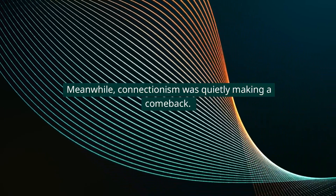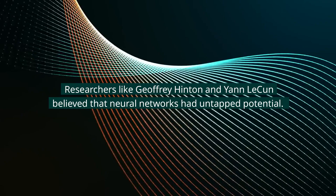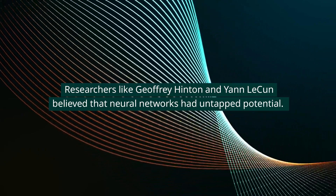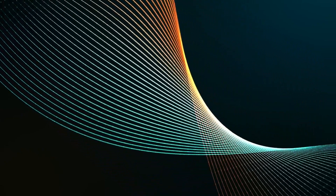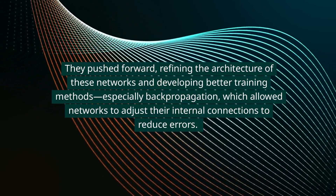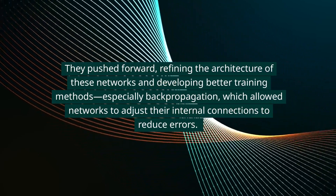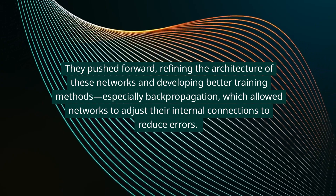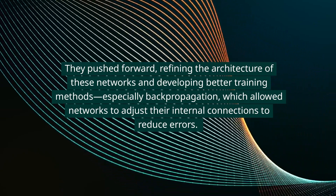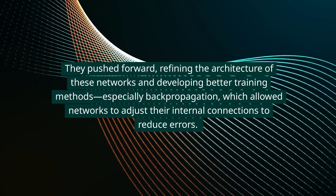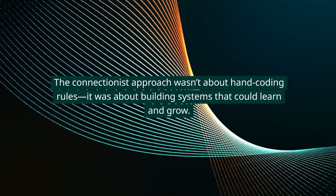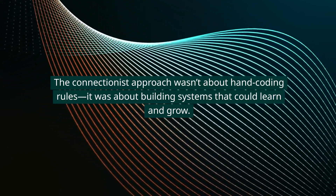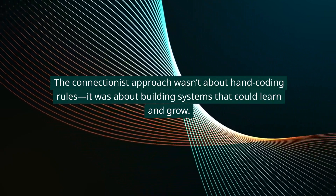Meanwhile, connectionism was quietly making a comeback. Researchers like Geoffrey Hinton and Yann LeCun believed that neural networks had untapped potential. They pushed forward, refining the architecture of these networks and developing better training methods — especially backpropagation, which allowed networks to adjust their internal connections to reduce errors. The connectionist approach wasn't about hand-coding rules; it was about building systems that could learn and grow.